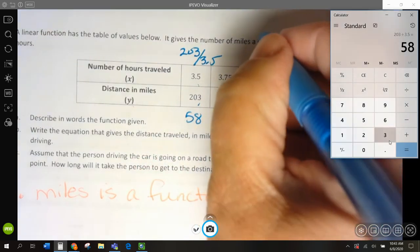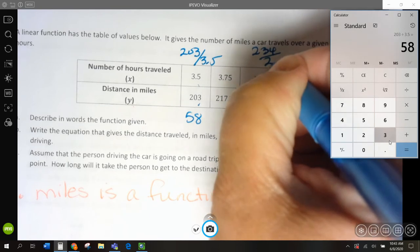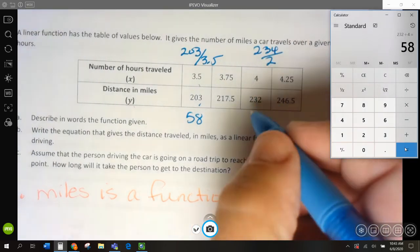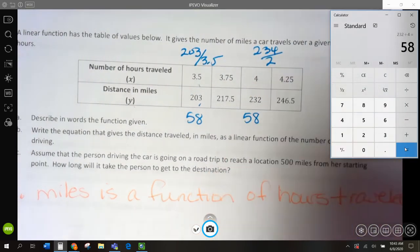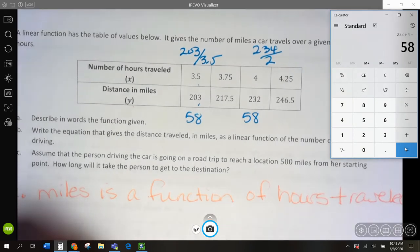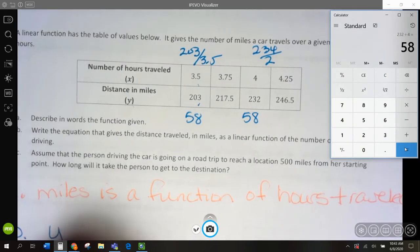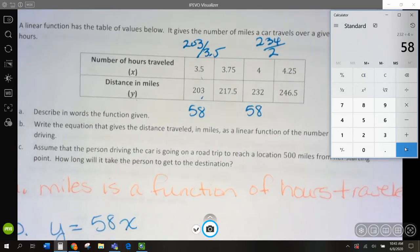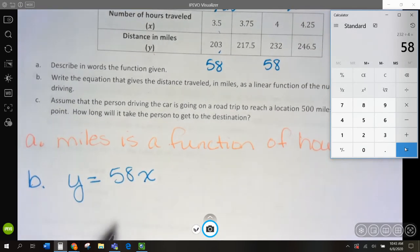Let's try this one. 232 divided by 4, 58. Yeah, it looks like we have that constant rate. So, for B, our total miles is going to be 58 times every hour we travel. Y equals 58x.